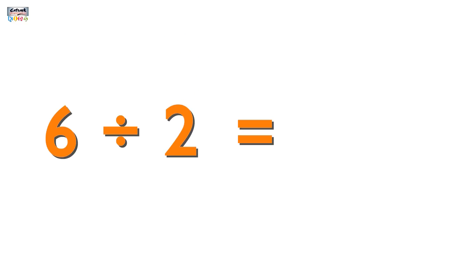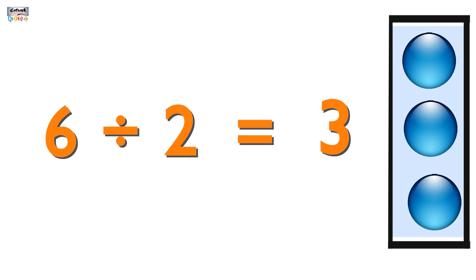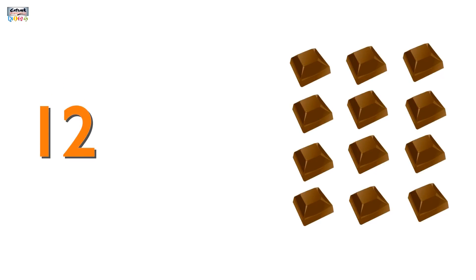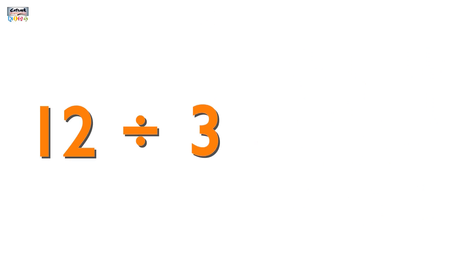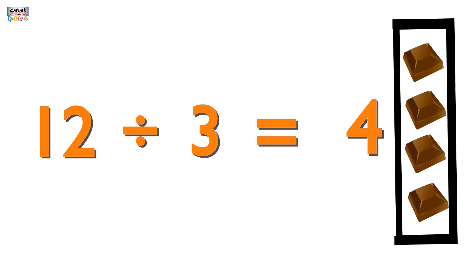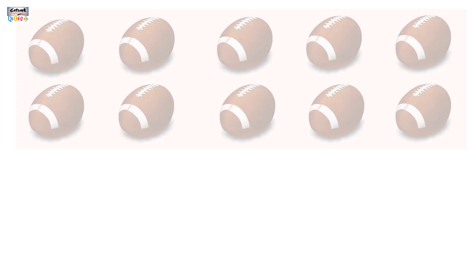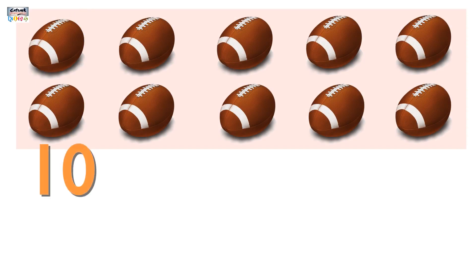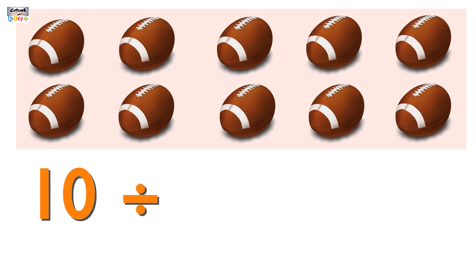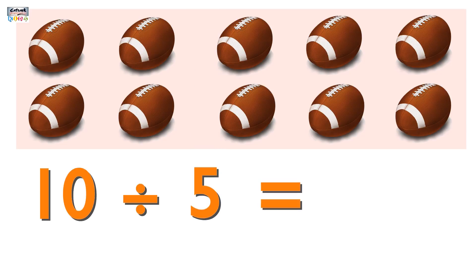For example, if six balls are divided among two kids, then the answer will be three balls per kid. If twelve chocolates are divided among three kids, then the answer will be four chocolates per kid. If there are ten rugby balls and they are divided amongst five people, then the answer will be two rugby balls per person.